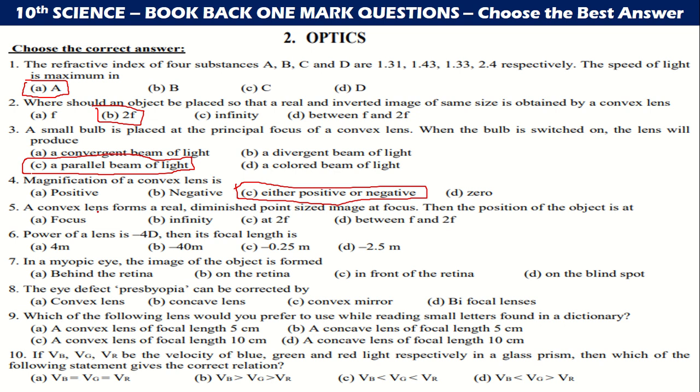A convex lens forms a real diminished point sized image at focus, then the position of the object is at infinity. Power of a lens is -4D, then the focal length will be -0.25 meter. In myopia, the image of the object is formed in front of the retina. The eye defect presbyopia can be corrected by bifocal lenses.